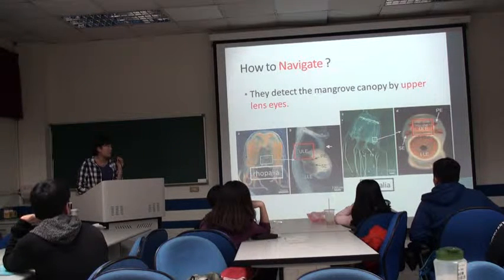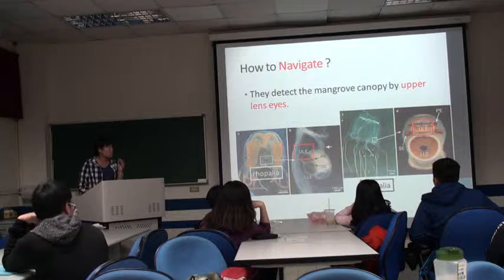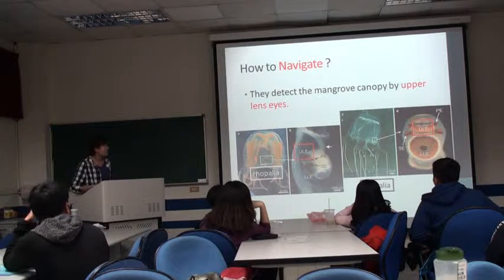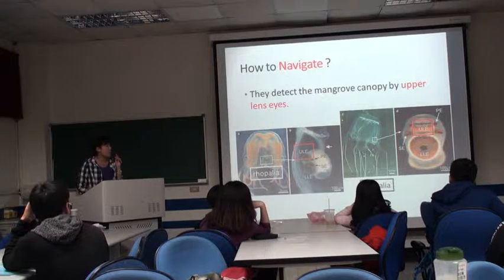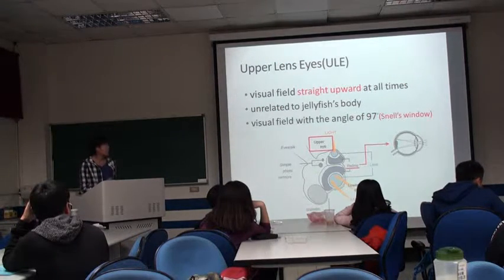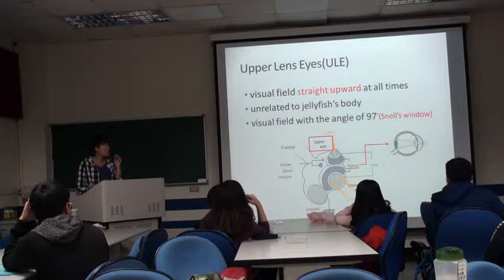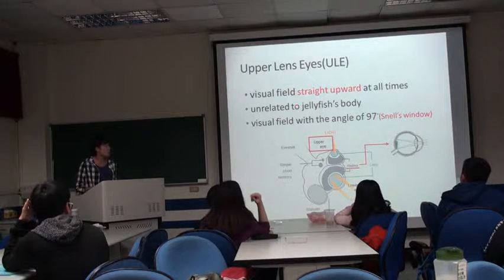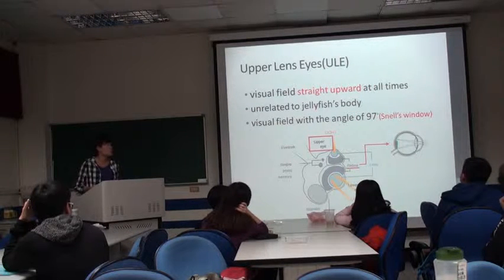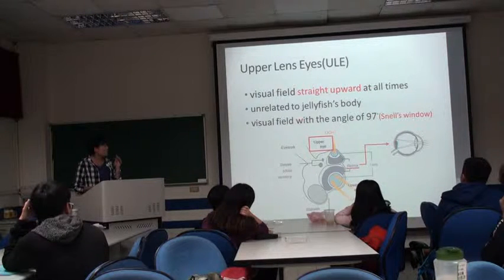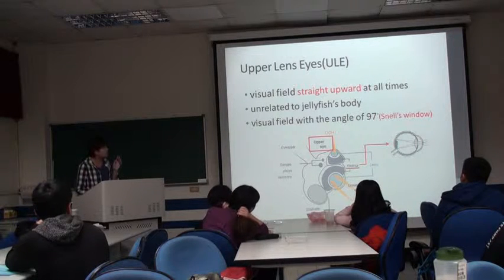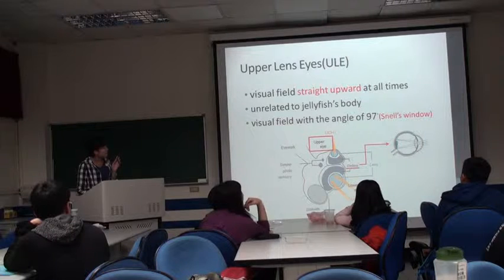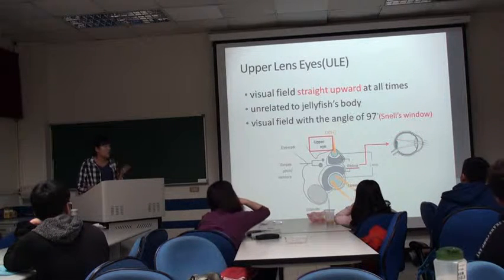Third, how do they navigate? They usually detect the mangrove canopy using their upper lens eyes. You can see the rhopalia here — picture B is their side view and picture D is their front view. The upper lens eyes keep their visual cues directed straight upward at all times, relative to their body's directional axis. The size of the visual field is usually close to an angle of 97 degrees, because of Snell's window. The retina is where the image forms.